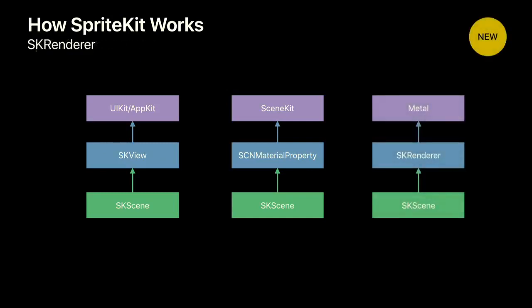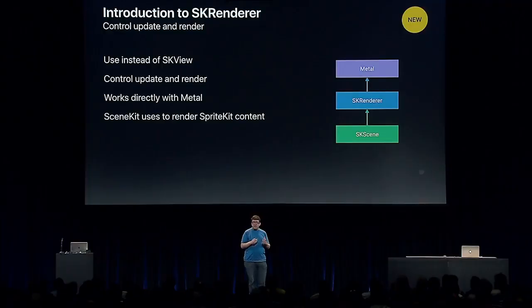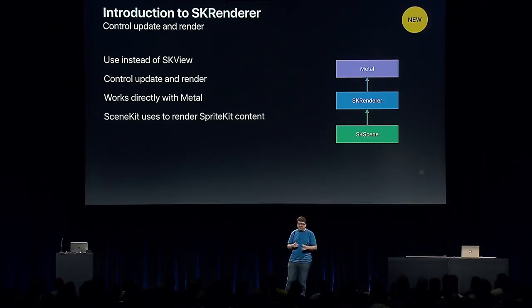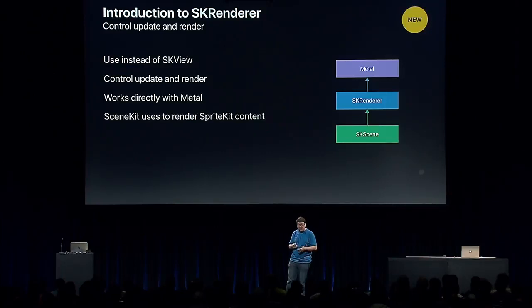Enter SKRenderer. You use it instead of SKView to gain more control over SpriteKit. Like SKView, you just set your scene on the renderer. Unlike SKView, SKRenderer lets you determine when SpriteKit performs updating and rendering. It allows you to work directly with Metal, enabling you to render SpriteKit into an off-screen texture to use however you want. This is actually how SceneKit efficiently renders SpriteKit content in 3D — it uses SKRenderer under the hood.